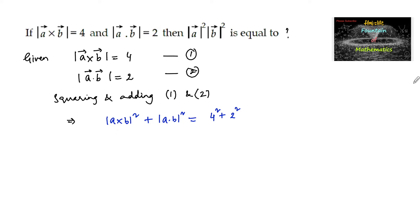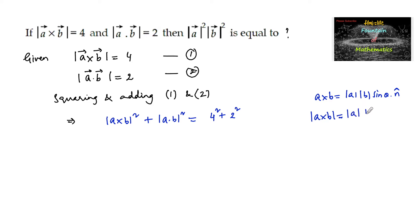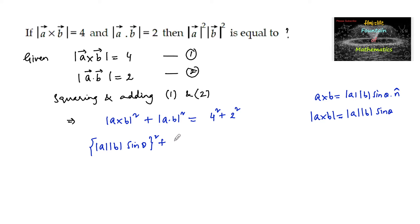We know that a cross b is equal to mod a mod b sin theta into a unit vector perpendicular to both vectors a and b. The magnitude of a cross b is mod a mod b sin theta, since the magnitude of the unit vector is 1. So we write mod a mod b sin theta whole squared.